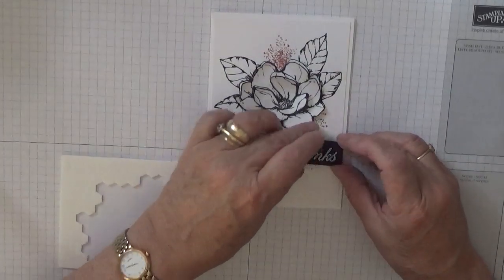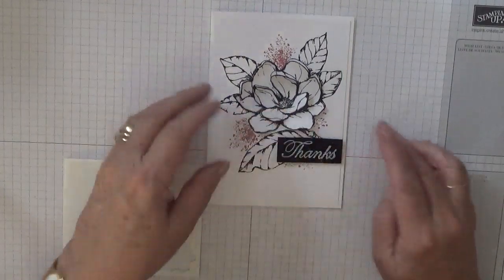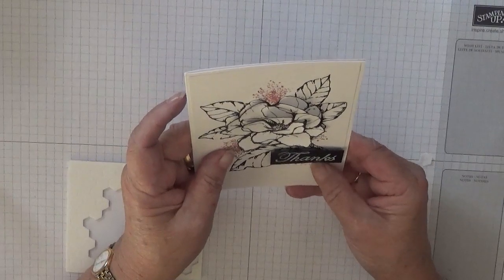And this we're going to sit there on dimensionals. And just sit that there, lining it up with the white cardstock and hopefully straight.